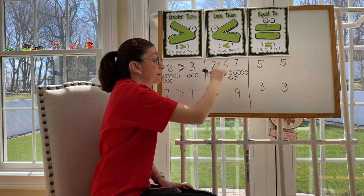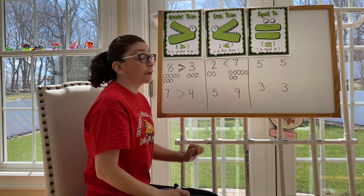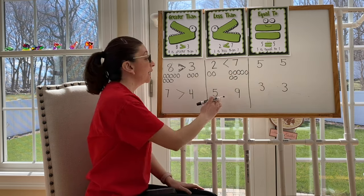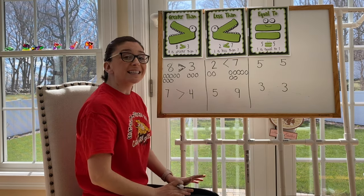If you look at the mouth of my arrow, it's still eating or facing the bigger number. Let's look at the numbers five and nine. Which number is less?